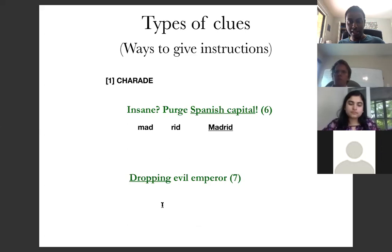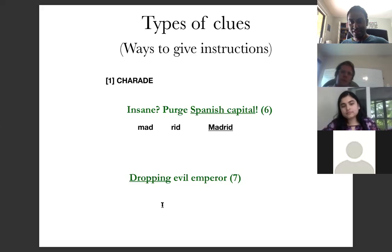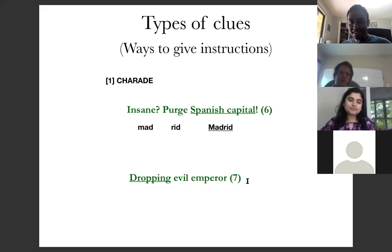To give another example: 'Dropping evil emperor, seven letters' — I've underlined the definition to make it easier. Dropping is the definition, and evil emperor are the instructions. It's a charade — 'sin' plus 'king' gives you 'sinking.'